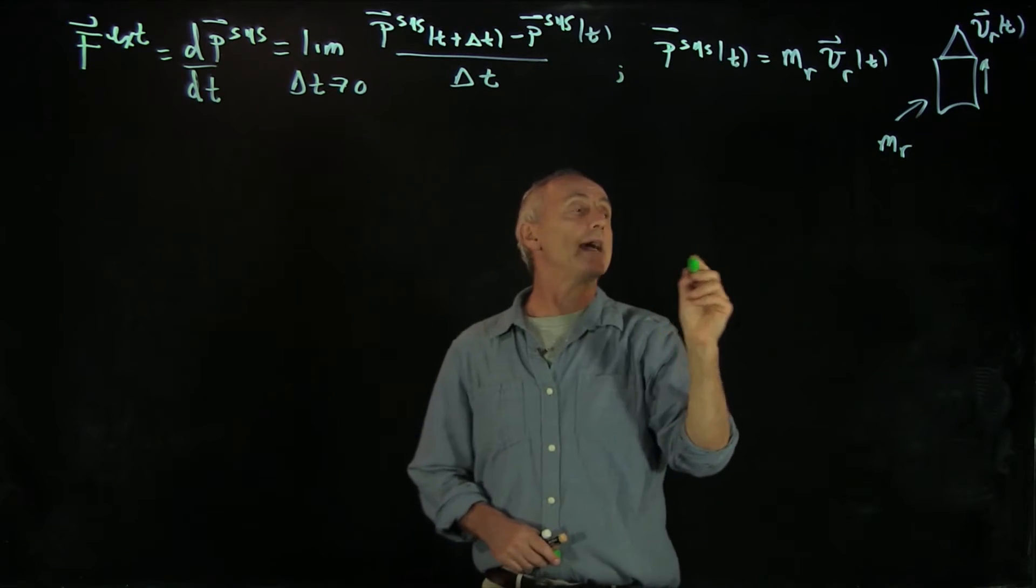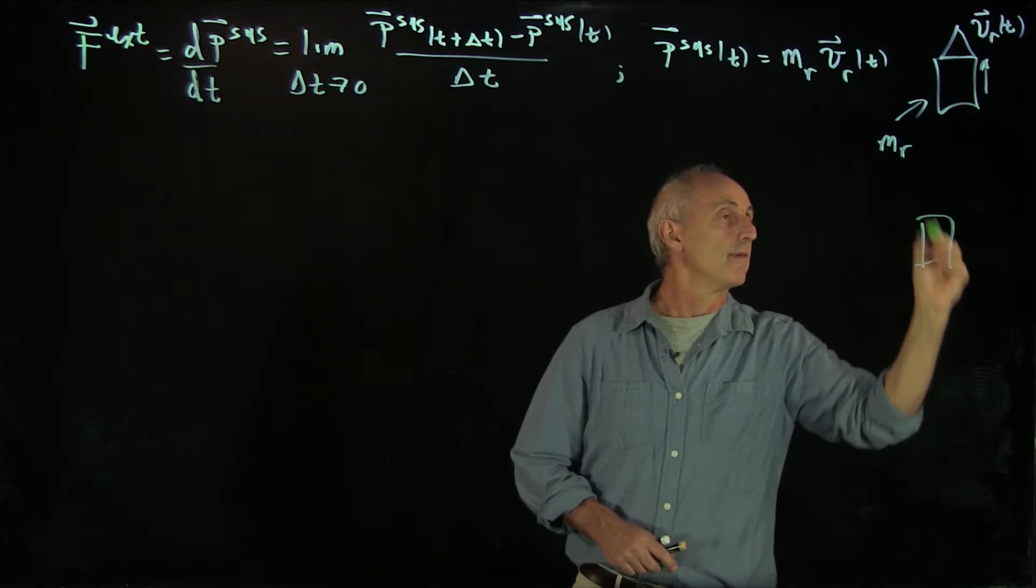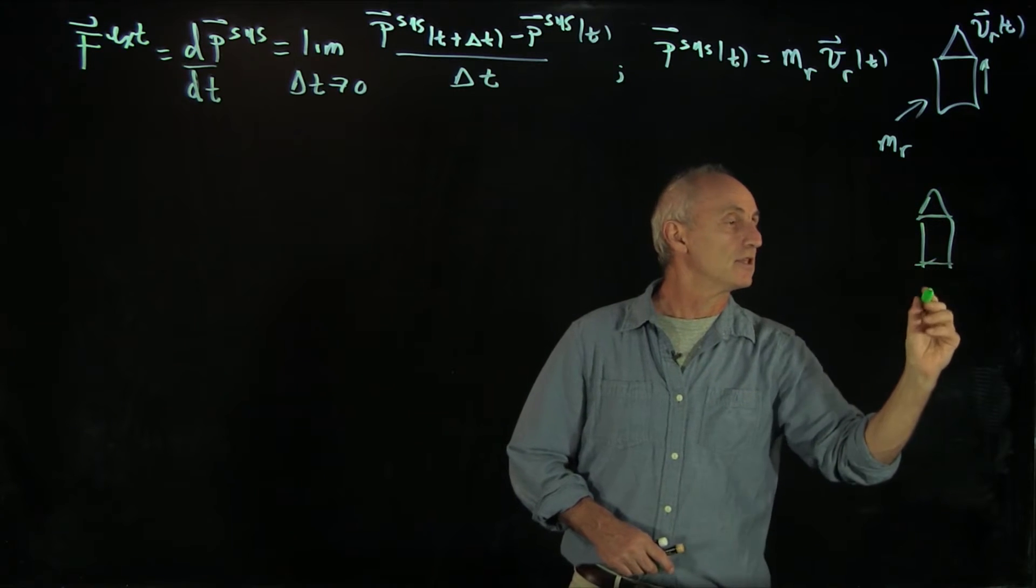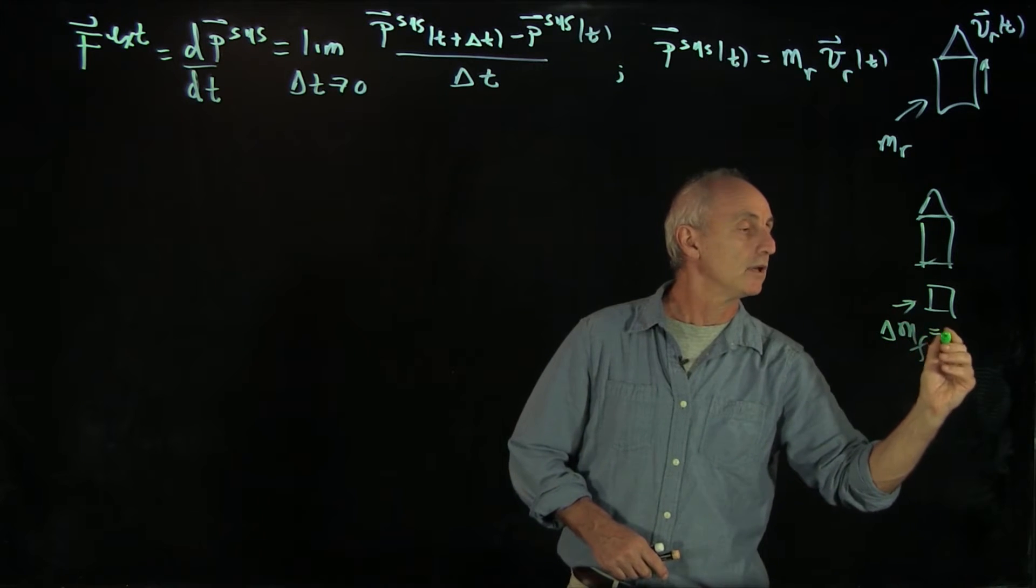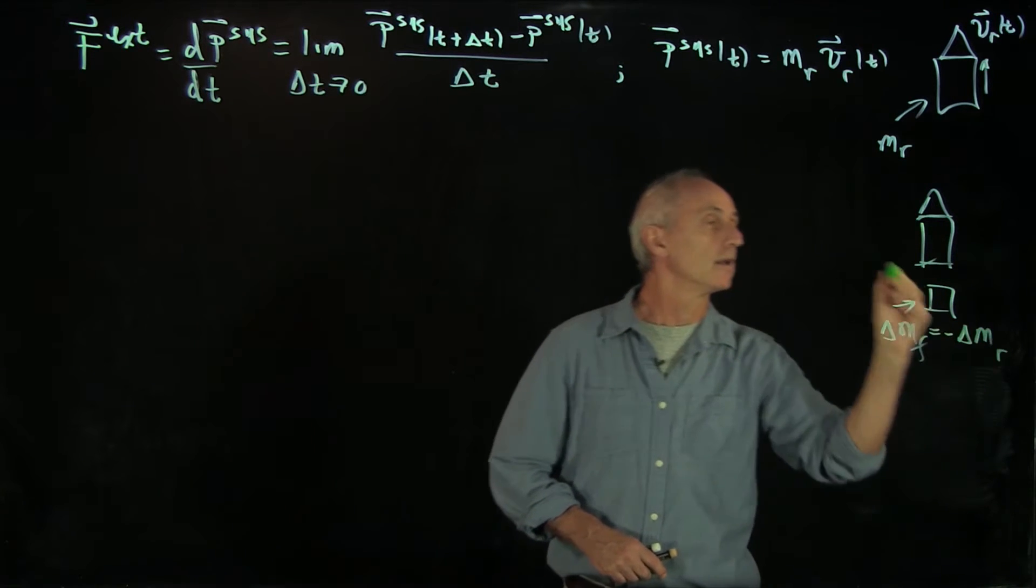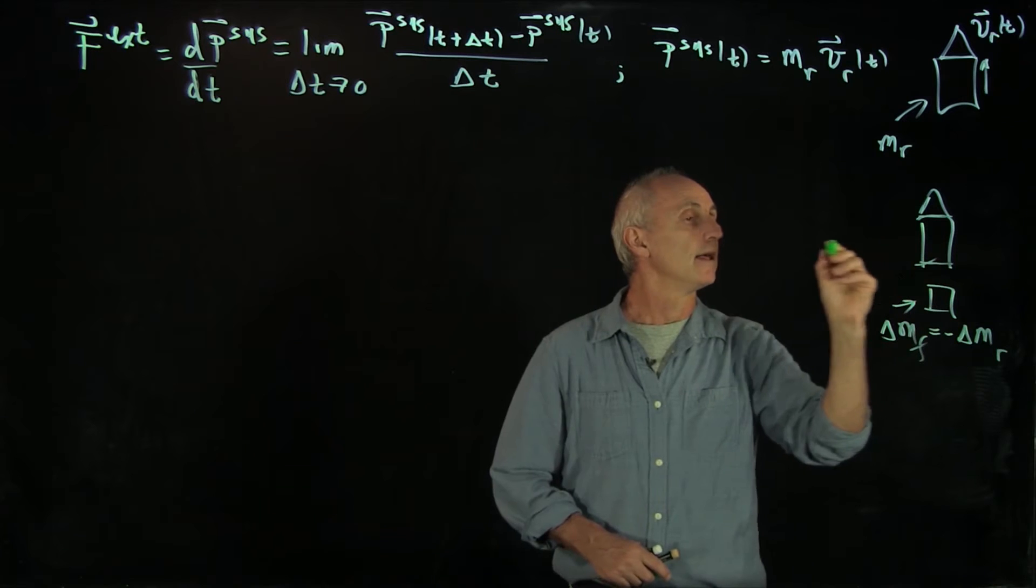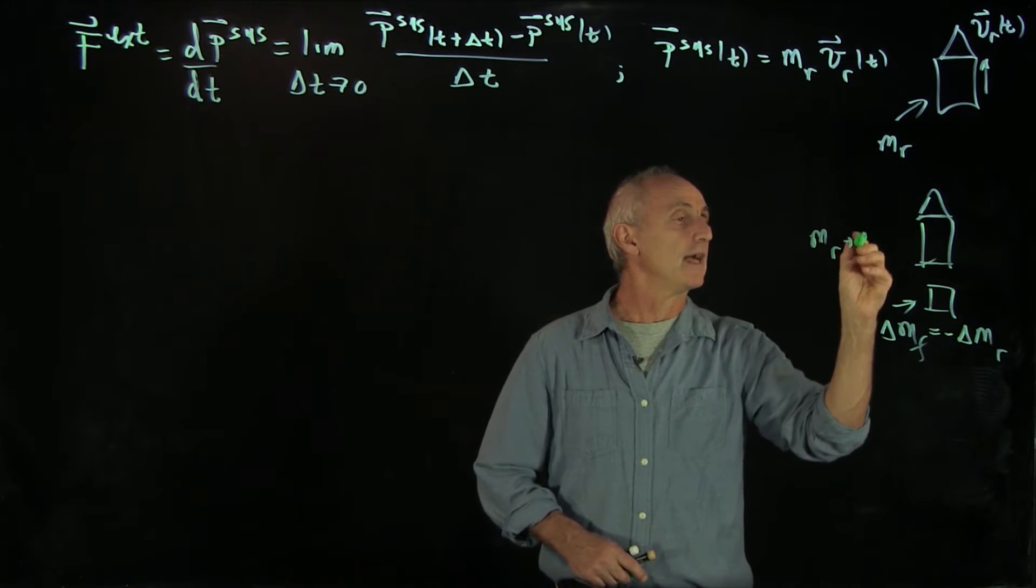And we had the system at time t plus delta t, where we had delta m fuel equals minus delta m rocket. Here we had mr plus delta m.